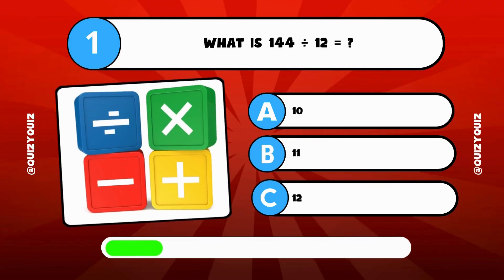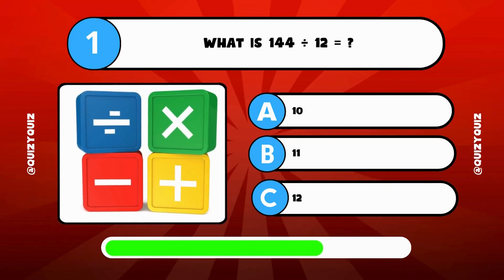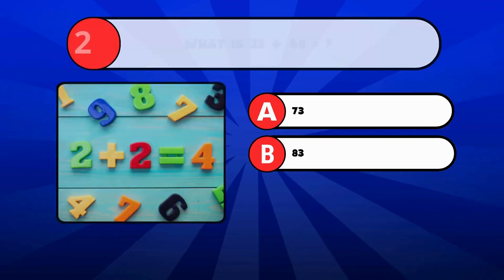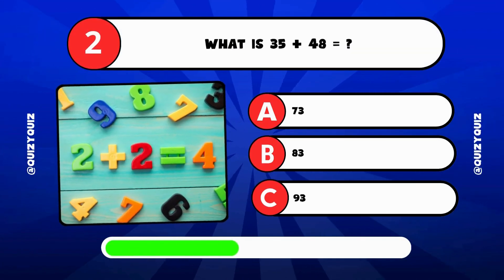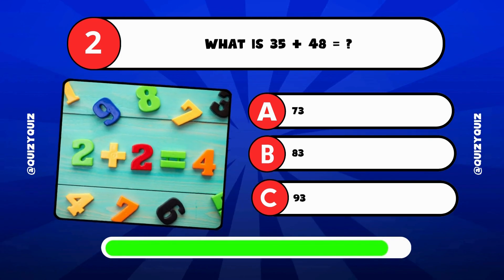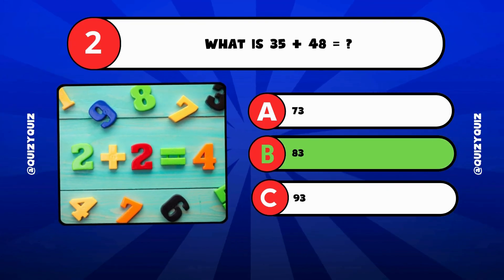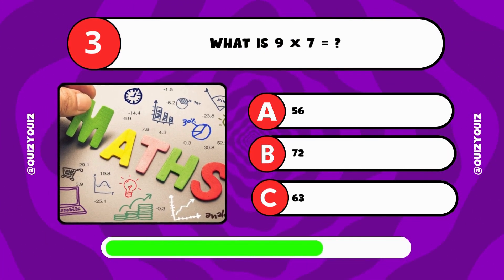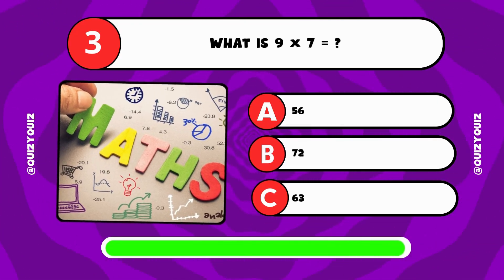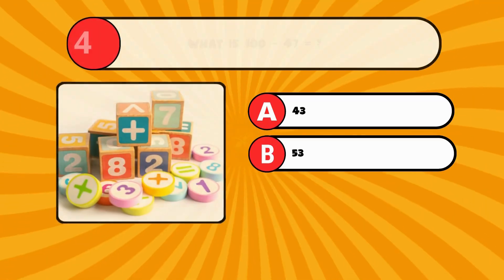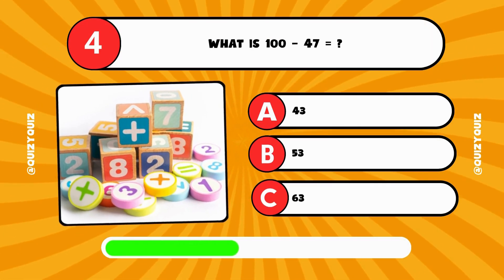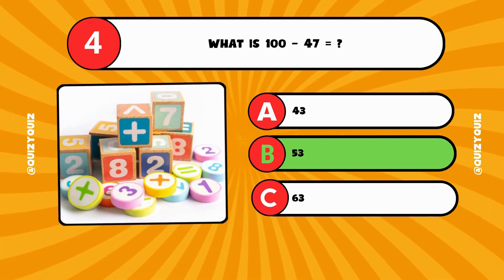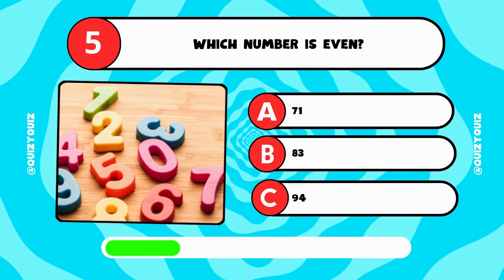What is 144 divided by 12? What is 35 plus 48? What is 9 times 7? What is 100 minus 47? Which number is even? 71, 83 or 94?